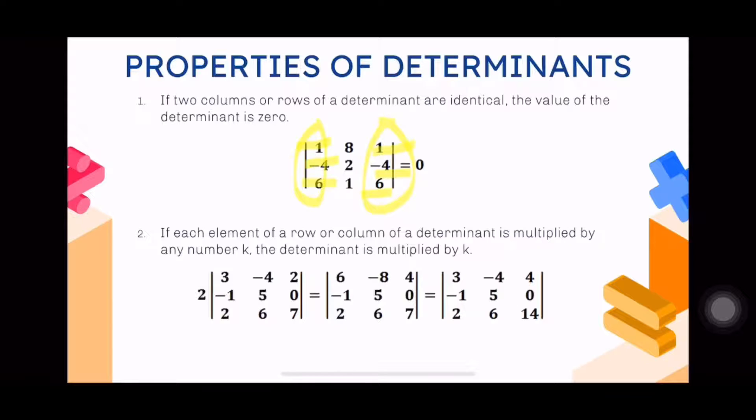Second property: if each element of a row or column of a determinant is multiplied by any number k, the determinant is also multiplied by k. We can factor out. If you have a matrix and notice a common factor on one row or one column - remember, only one - you can factor that out.